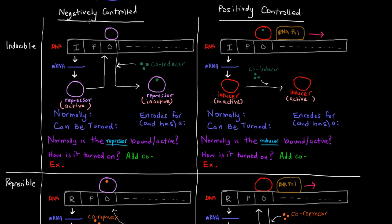On the top of the chart, I've written whether the system is negatively or positively controlled, and on the side, inducible or repressible. This first case is an inducible system that is negatively controlled. The fact that it's negatively controlled means it encodes for a repressor protein, and the fact that it's inducible means it can be turned on — so it's normally off.